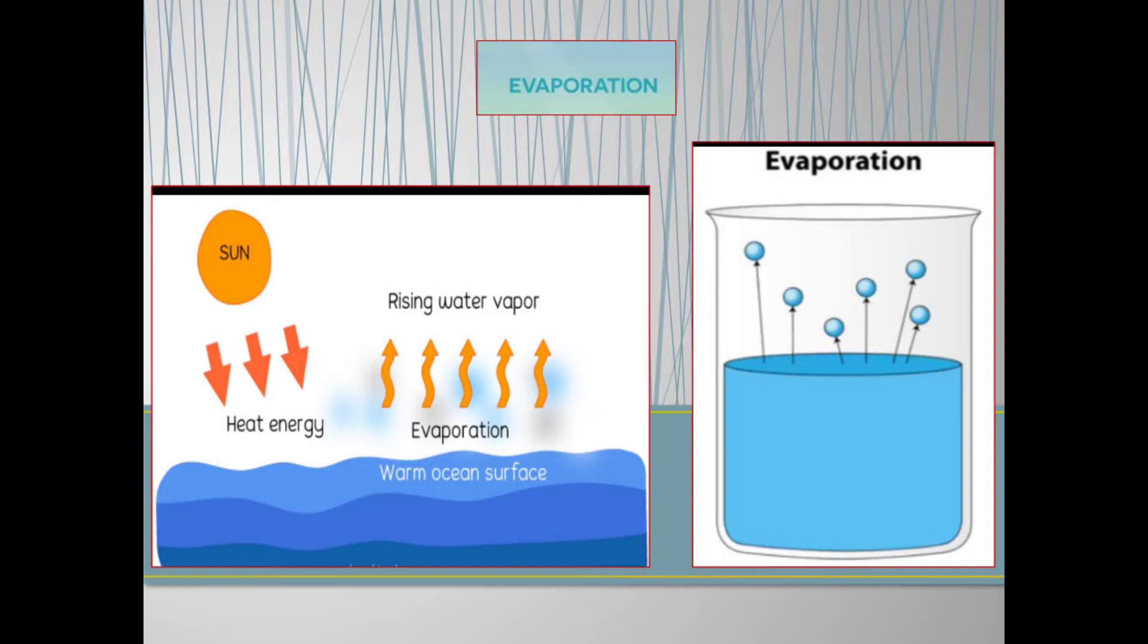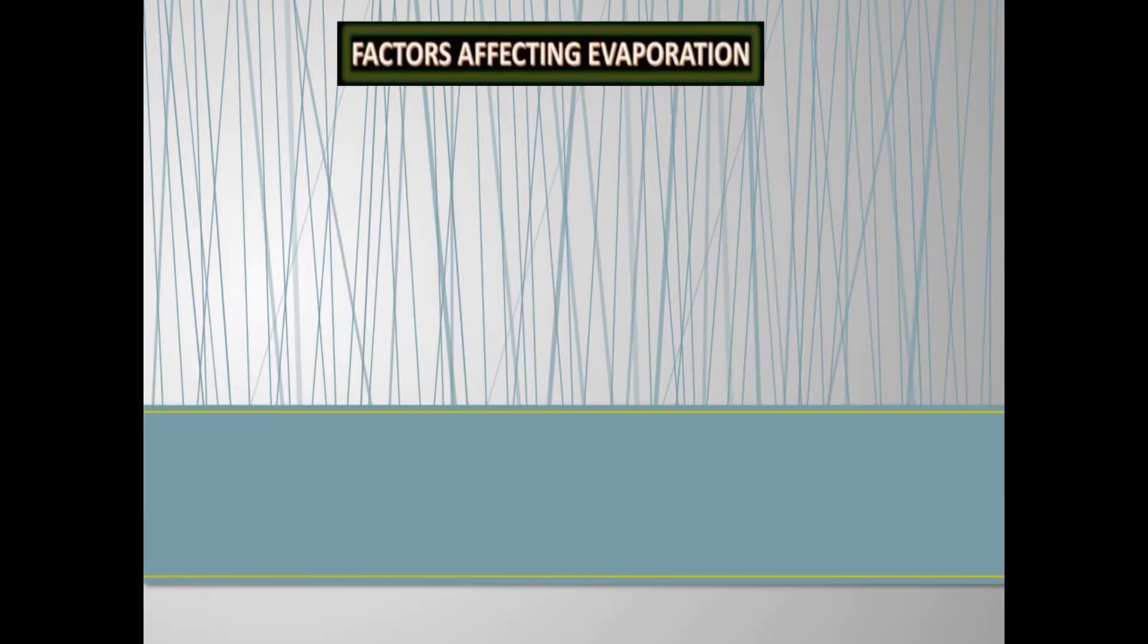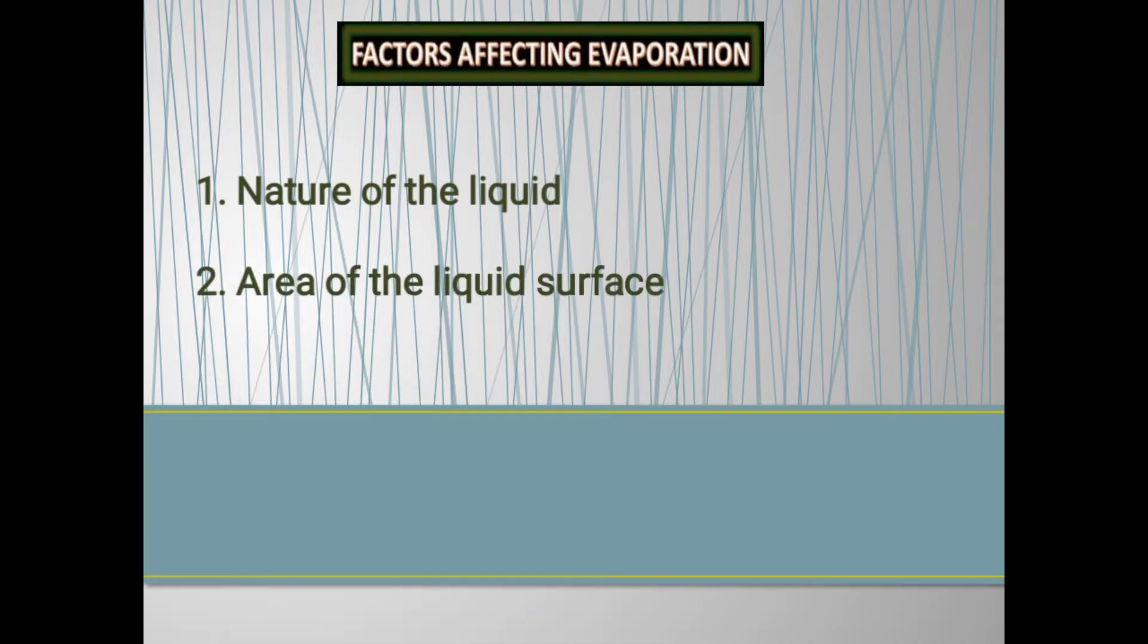Now, we will discuss factors affecting evaporation. The speed of evaporation varies. The rate of evaporation depends on many factors. These are nature of the liquid, area of the liquid surface, temperature and speed of air. One by one, I will discuss here.